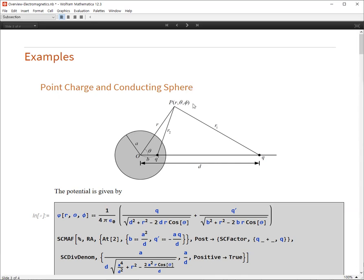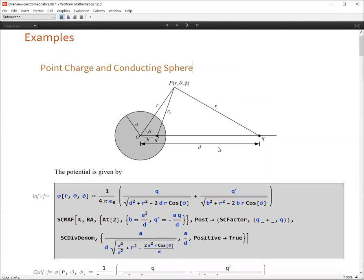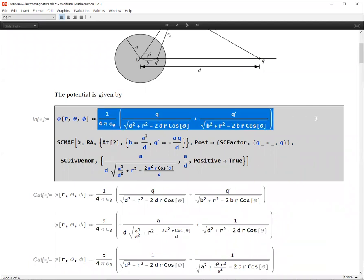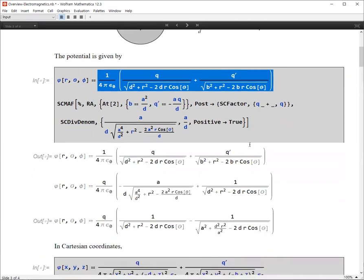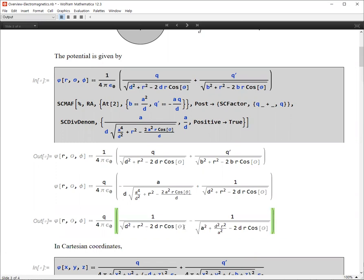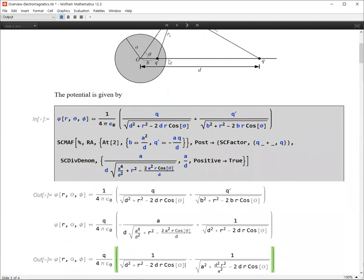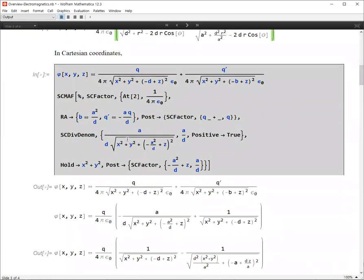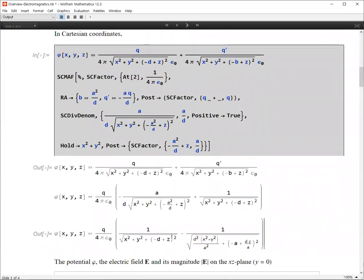Then you can calculate the electric potential and the electric field at some point p given here. The potential is using Coulomb's law. This is the potential at the point p. Then you can derive the formula for the potential given here in terms of r, the distance from the center, and the angle theta with respect to this axis. Or in Cartesian coordinates, you can also show the potential is given by this expression.